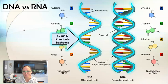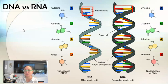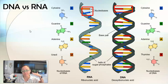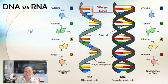They both have a sugar-phosphate backbone from those nucleotides joining together. They both have nitrogen bases. In DNA the nitrogen bases base pair, but RNA is single-stranded so you don't find base pairs. However, when we form RNA through the process of transcription, we use those RNA nitrogen bases to temporarily attach to the DNA bases.